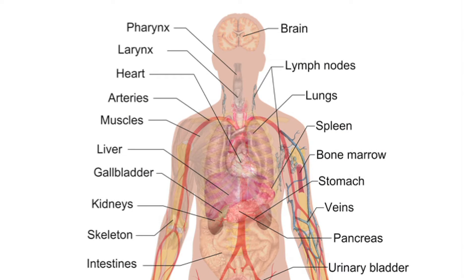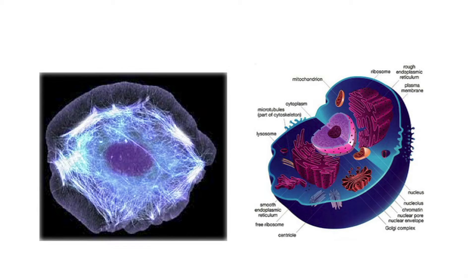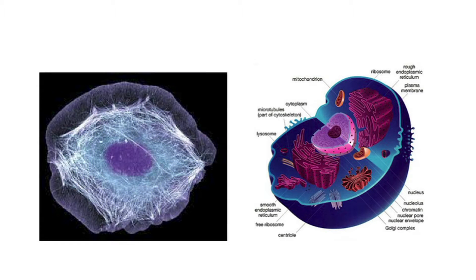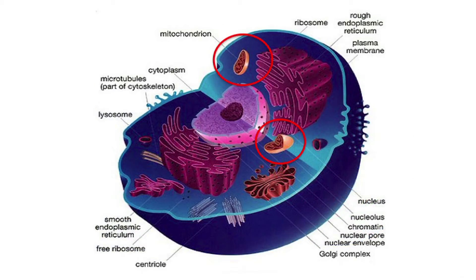Let's start with something more intuitive: the human body. The human body has many different systems and organs, each with its own distinct function. But all of these are made up of a basic unit, which is the cell. On the left is a stunning microscopic view of an actual human cell, and on the right is an illustration. The body of an adult has close to 100 trillion cells. Inside the cells are many subcellular organelles, and among these are the mitochondria, which are circled here in red.